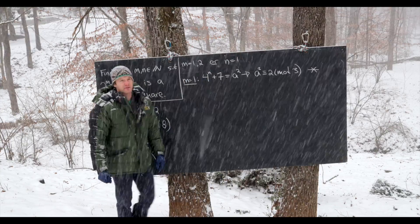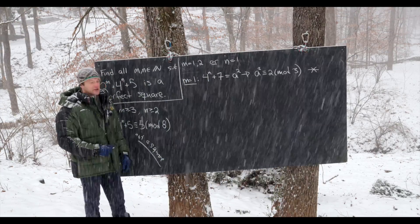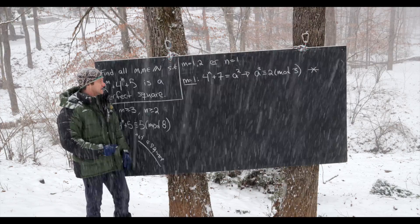The only squares mod 3 are 0 and 1. So that means we do not get a solution in this case when m is equal to 1.